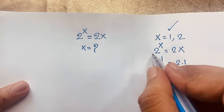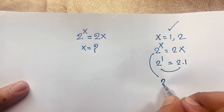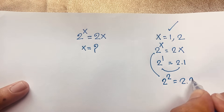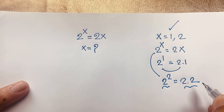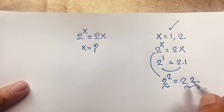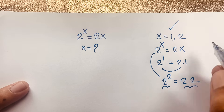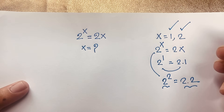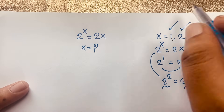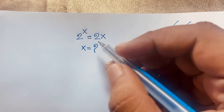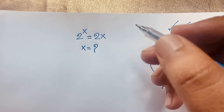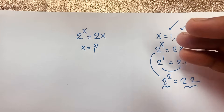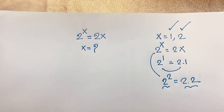If x is equal to 2, then 2 to the power 2 is equal to 2 times 2 — 4 equals 4 — so left-hand side and right-hand side are equal, meaning x equals 2 is also a right answer. So we can see x equals 1 or x equals 2, but how do we systematically solve this problem?